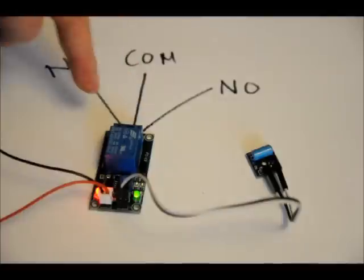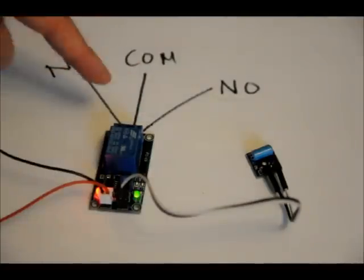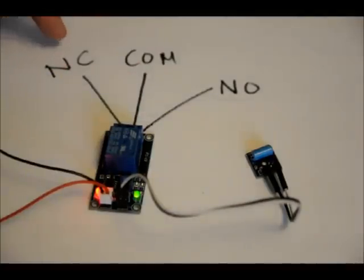The relay has three outputs, the terminal block in the back. Since it's not labeled on the board very well, I'm showing you here. The left pin, from this perspective, is the normally connected pin. The middle pin is the common pin and the right pin is the normally open pin.